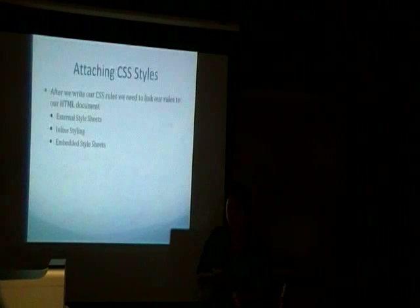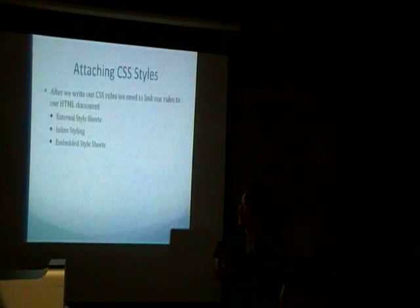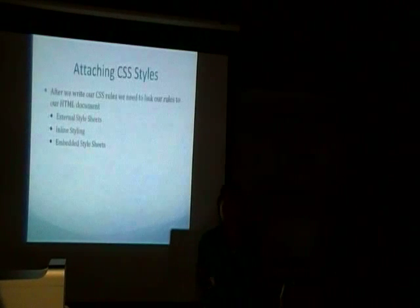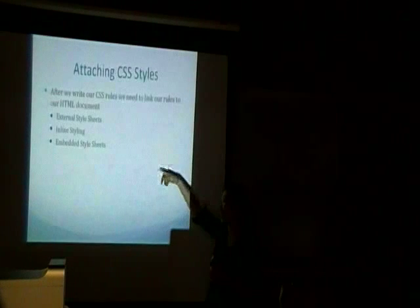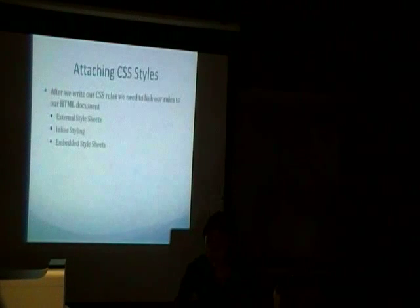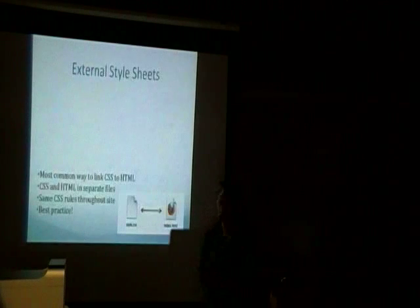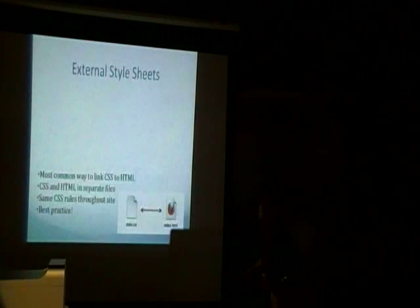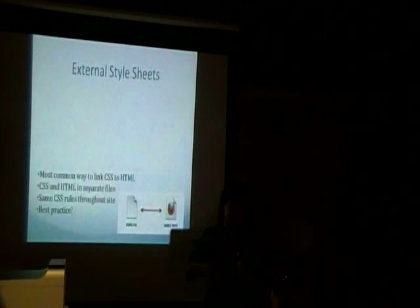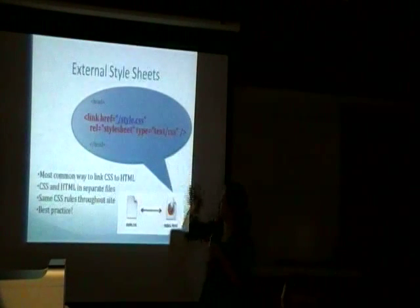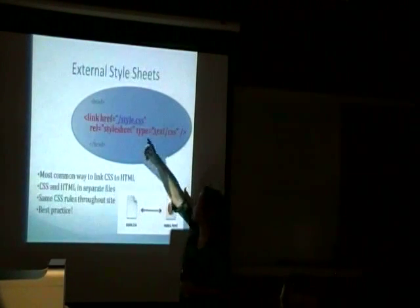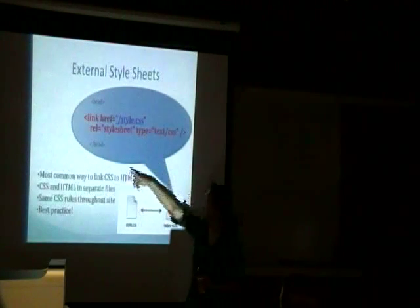After writing CSS rules, you need a way to link them to your HTML, or else nothing happens. There are three ways to do this: external style sheets, inline styling, and embedded style sheets. External style sheets are the most common — the CSS and HTML are in separate files, and inside your head tags you use a link element with href pointing to your stylesheet URL.